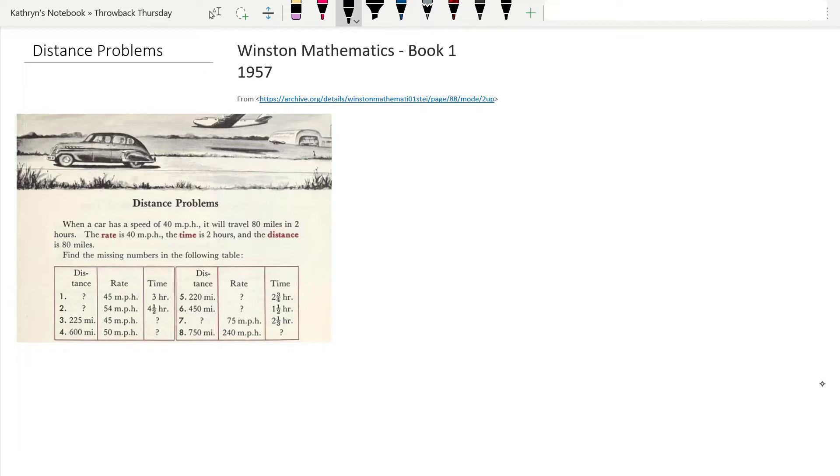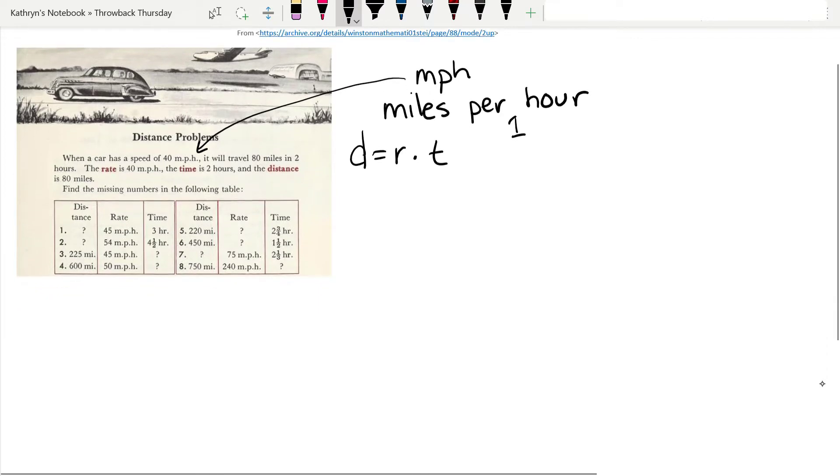When a car has a speed of 40 miles per hour, it will travel 80 miles in 2 hours. The rate is 40 miles per hour, the time is 2 hours, and the distance is 80 miles. Let's review for a second. Distance always equals rate times time. Now I want to point out one other thing. MPH means miles per hour, or miles per 1 hour. So let's fill in our table.